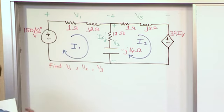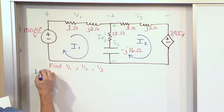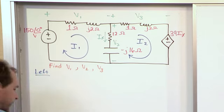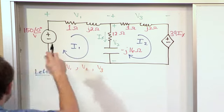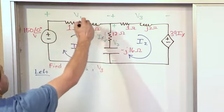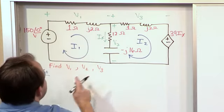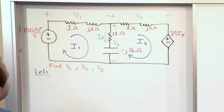So for the first equation, I'll say for the left-hand side, for the left-hand mesh. As we walk around the perimeter of this mesh, we want to sum all of the voltage drops that we get there.